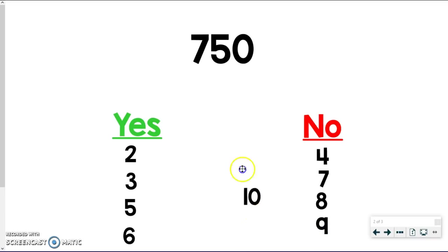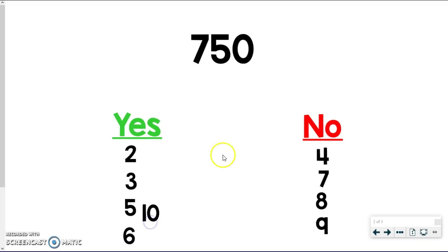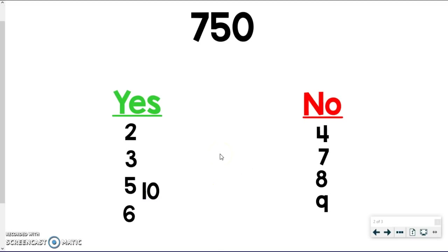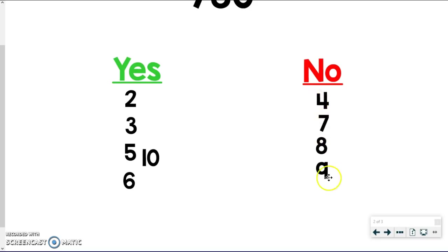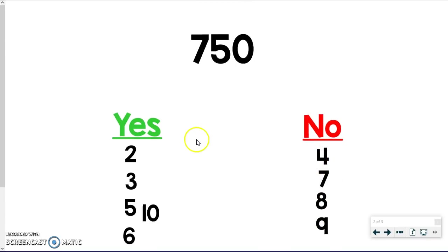And the last one — my favorite — divisible by 10: since 750 ends in 0, it is divisible by 10, so 10 goes on the yes side. So for 750, you would circle 2, 3, 5, 6, and 10, and you would not circle 4, 7, 8, and 9 because those did not work.